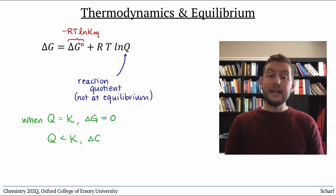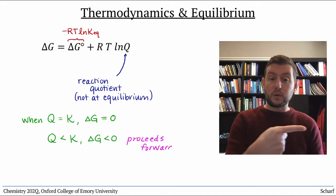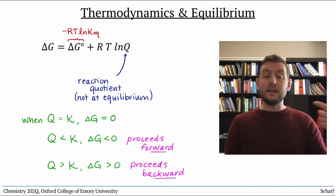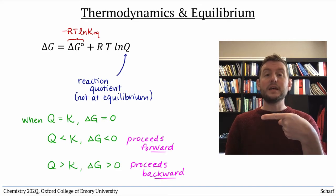If Q is less than K, then delta G is negative, the reaction proceeds forward. And if Q is greater than K, then delta G is positive, the reaction proceeds backward.